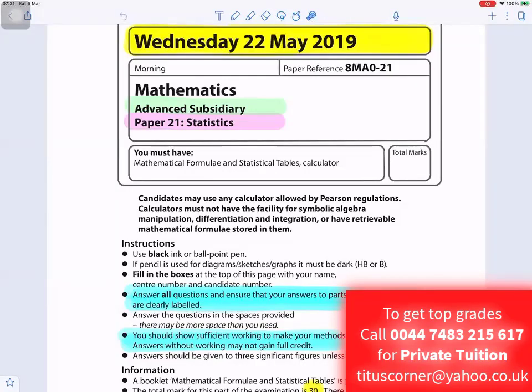Statistics Advanced Subsidiary, Wednesday 22nd May 2019. Answer all questions and ensure that your answers to parts of questions are clearly labeled. You should show sufficient working to make your methods clear. Answers without working may not gain full credits. The total mark for this part of the examination is 30. There are five questions. This is Statistics Paper 21, Advanced Subsidiary.